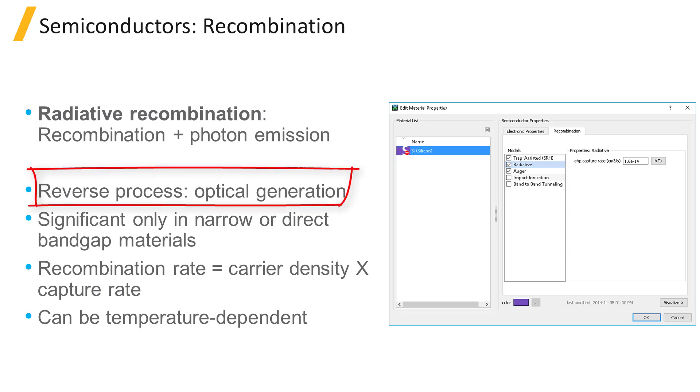The opposite process is called optical generation, and occurs when a photon is absorbed by an electron in the valence band, promoting it to the conduction band and leaving a hole in its place.